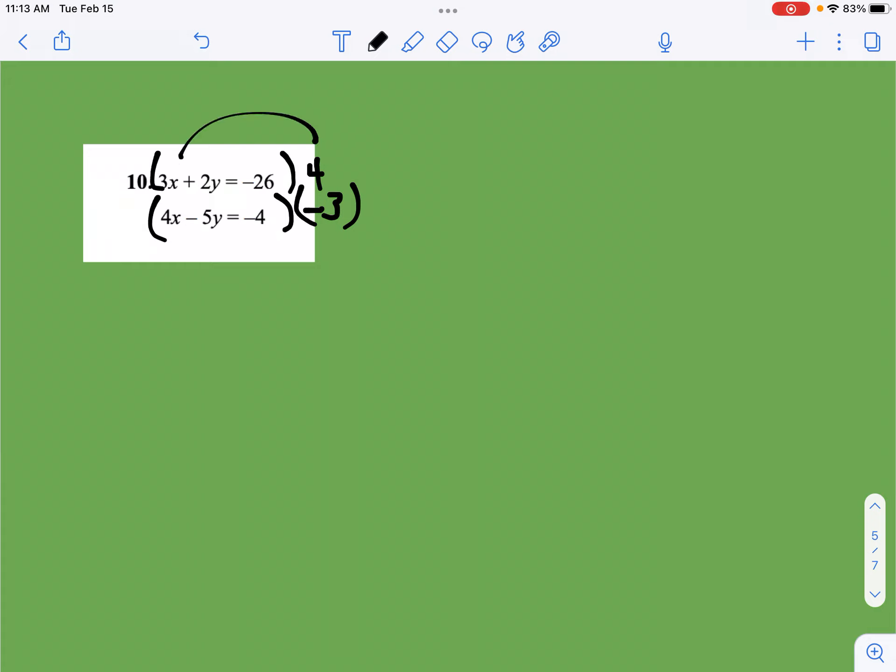So let's rewrite this. We get 12x plus 8y equals negative 104, and then my other one, I get negative 12x plus 15y, because we have a double negative, equals 12, all right?